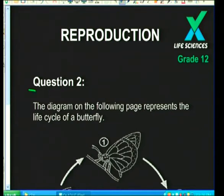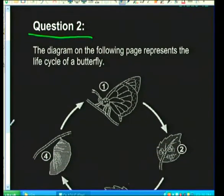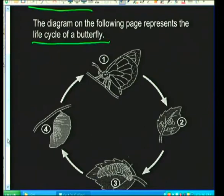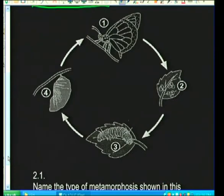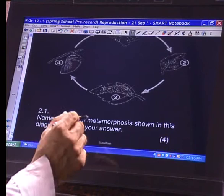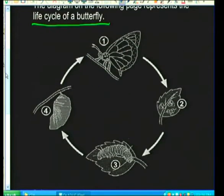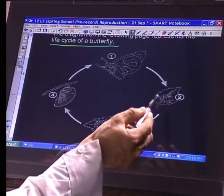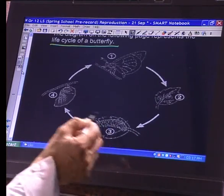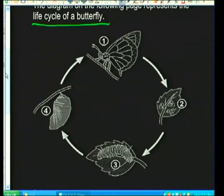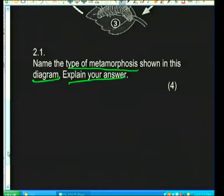We move to question 2, based on the life cycle of a butterfly diagram. The diagram shows four stages. Name the type of metamorphosis shown. The answer is complete metamorphosis.